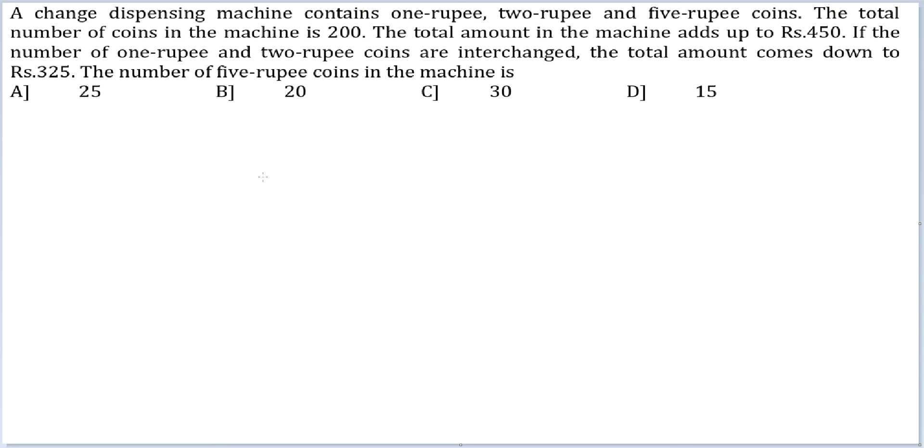So if O, T, and F represent the number of 1 rupee, 2 rupee, and 5 rupee coins, then O plus T plus F equals 200, and O plus 2T plus 5F equals 450.